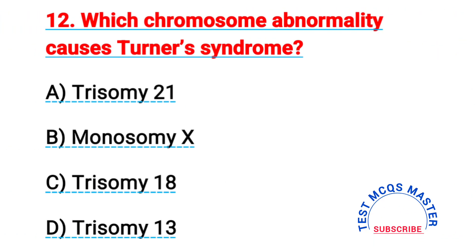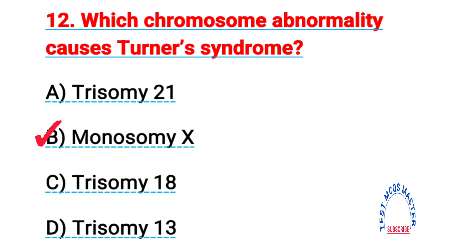Question number twelve: which chromosome abnormality causes Turner's syndrome? The right answer is B, monosomy X.